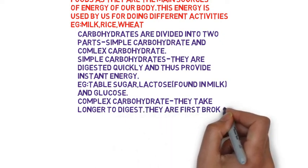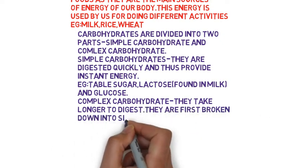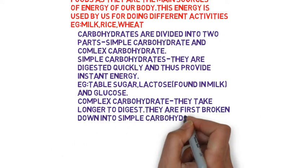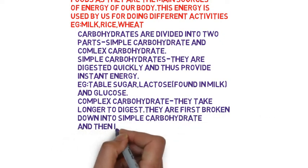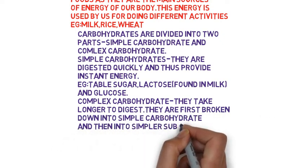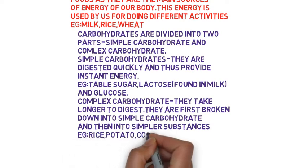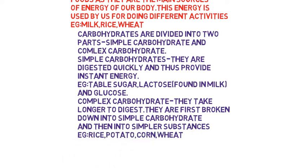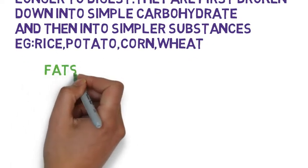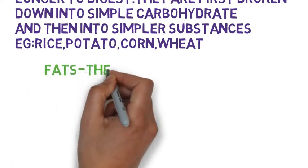Complex carbohydrates take longer to digest. They are first broken down into simple carbohydrates and then into simpler substances. For example, potato, corn, and wheat.